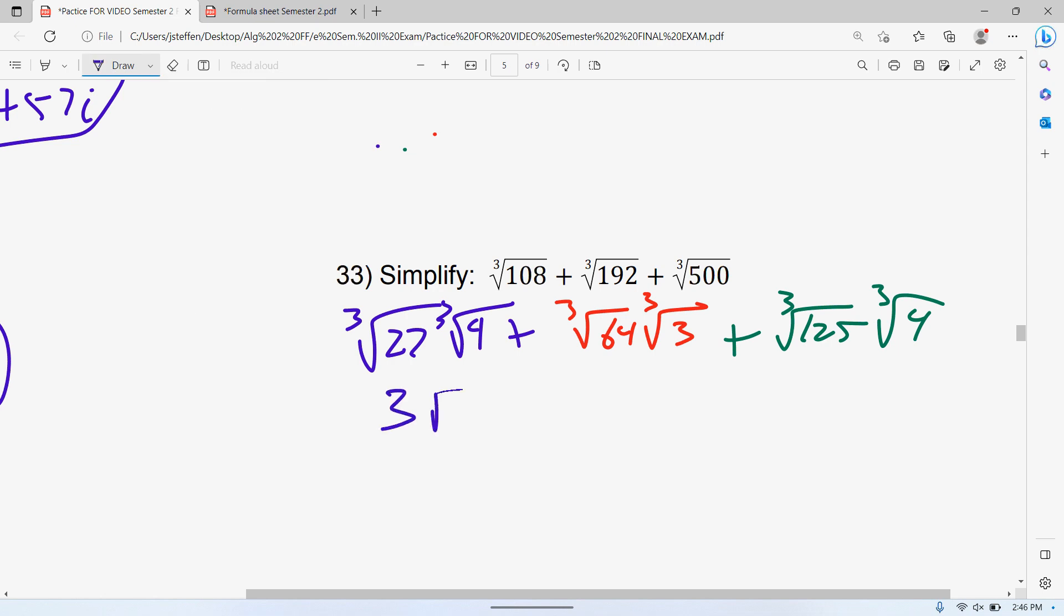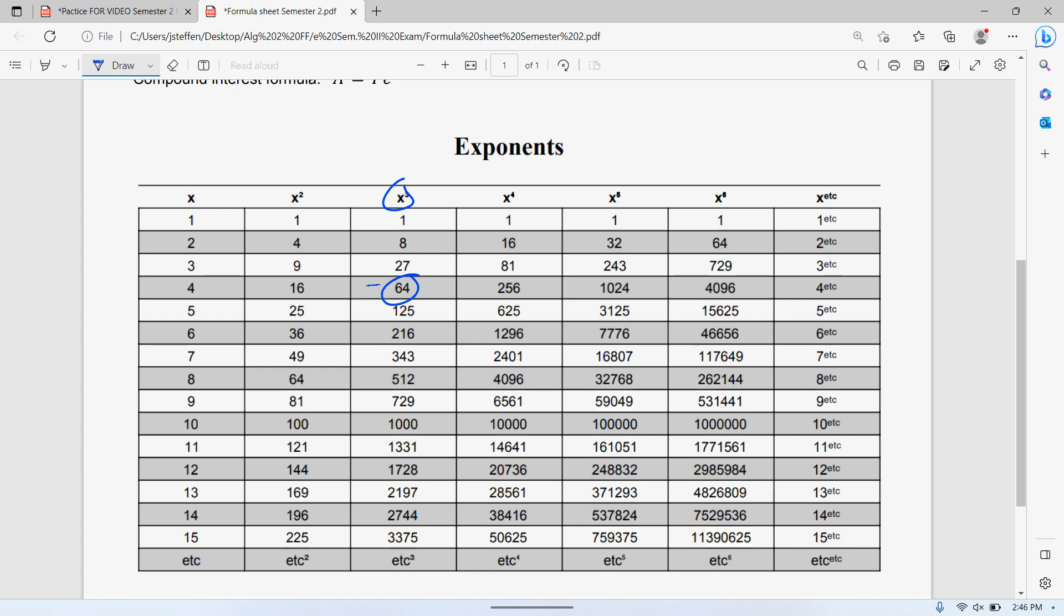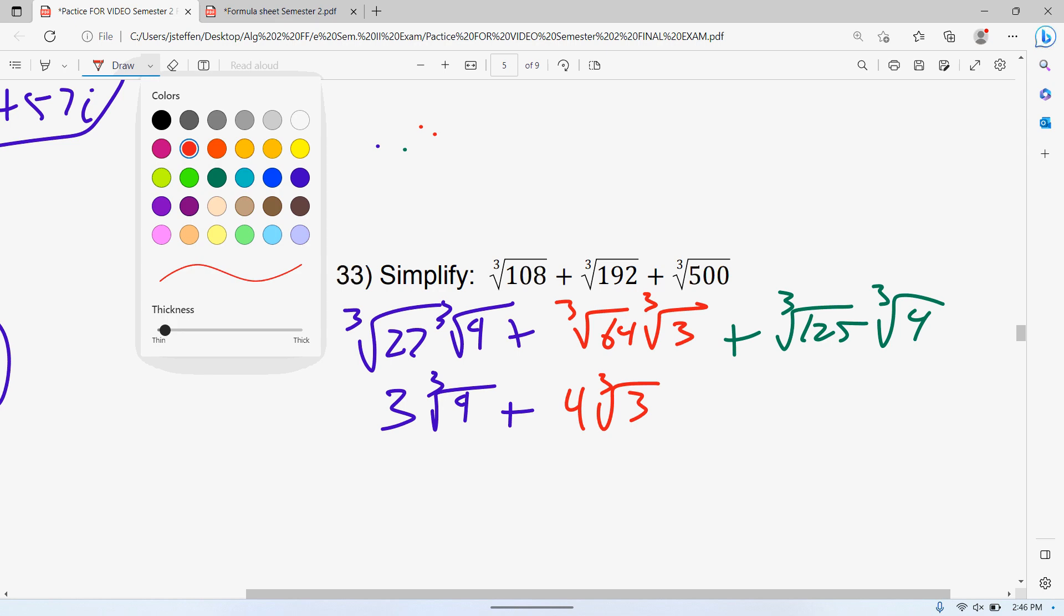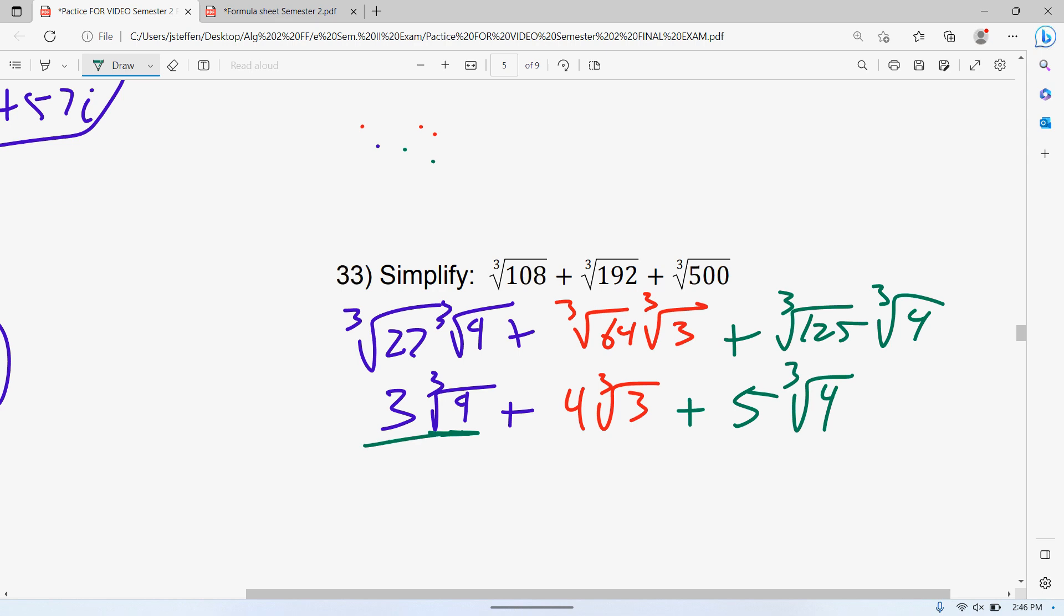Now the whole reason we did that is because the third root of 27 is 3. So that adds to be 3 times the third root of 4. 4 is 4 times the third root of 3. And third root of 125 is 5 times the third root of 4. Last but not least, because we have the same index number and inside the radical the same radical, we can combine those. So 3 plus 5 is 8 times the third root of 4.